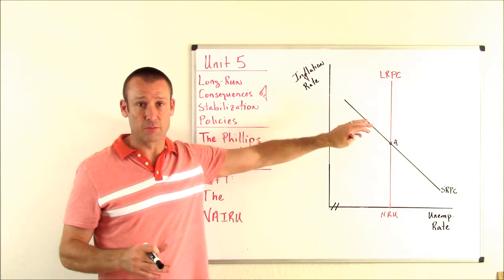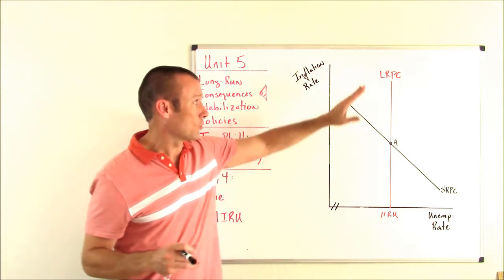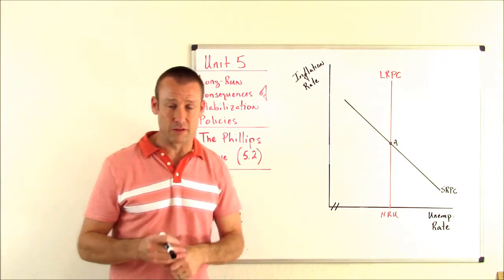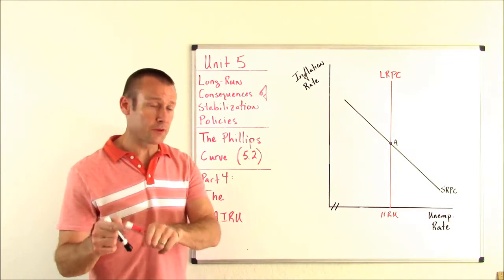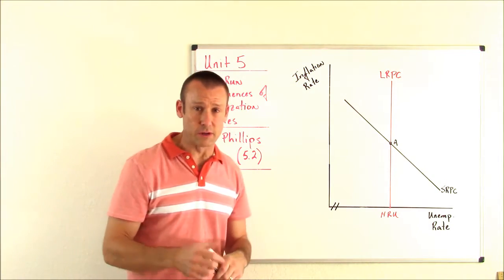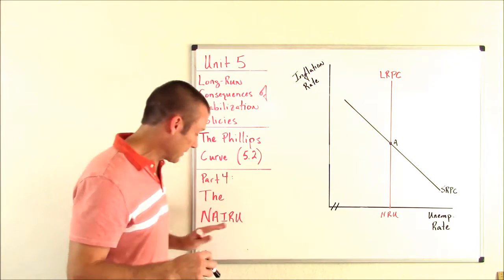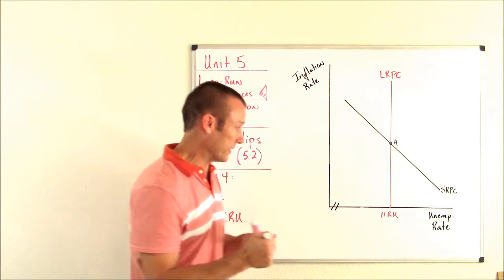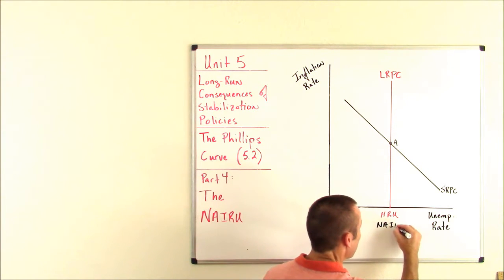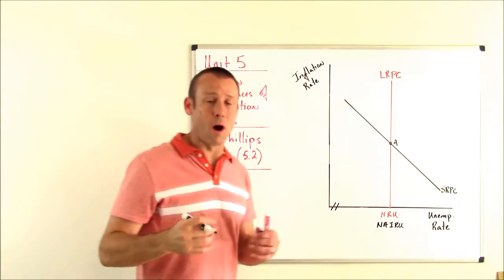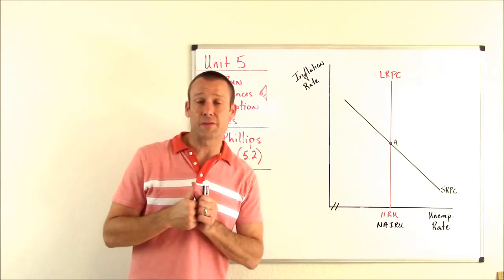To understand this concept, we'll use our Phillips curve model. I've got the inflation rate and unemployment rate axes, the NRU (national rate of unemployment), the LRPC, and the SRPC. Where do I put the NAIRU? Right where the NRU is — they are the same unemployment rate. The natural rate of unemployment and the NAIRU are the same.